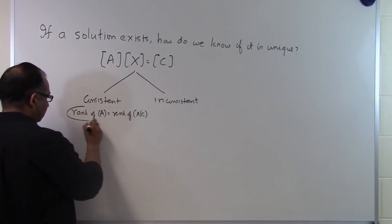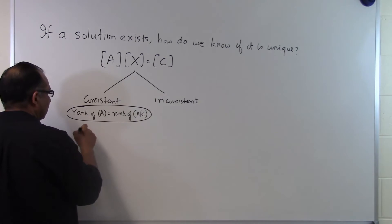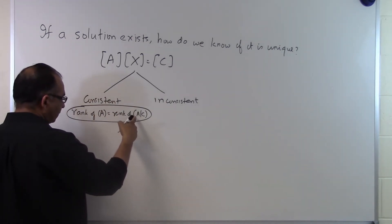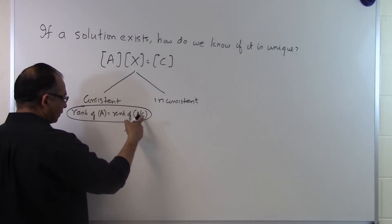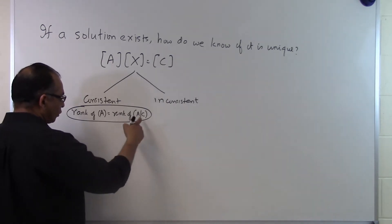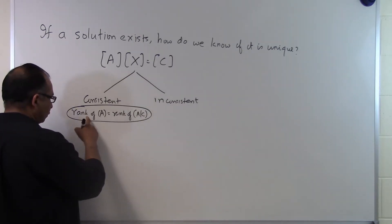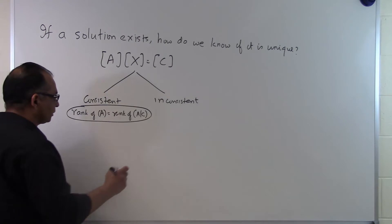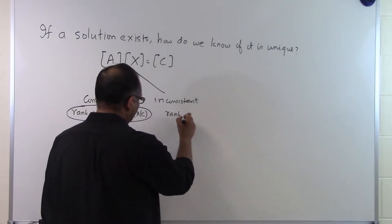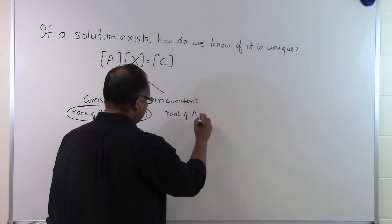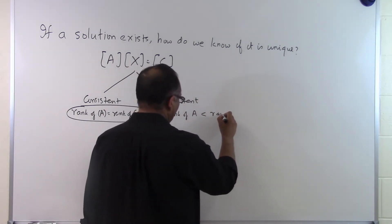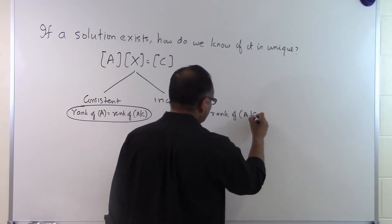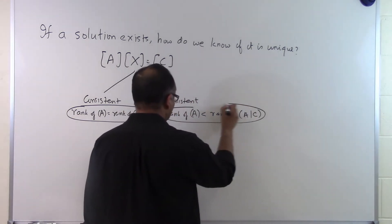We will have a consistent system of equations if the rank of the coefficient matrix is the same as the rank of the augmented matrix — augmented meaning that we are putting the right side vector as the last column with the A matrix. If the rank of the two matrices is the same then we have a consistent system of equations. But if the rank of A is less than the rank of the augmented matrix then we have an inconsistent system of equations.